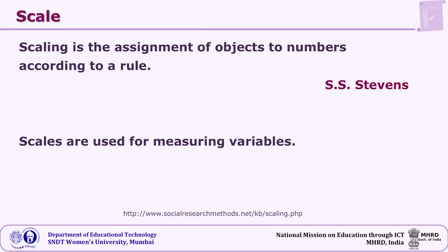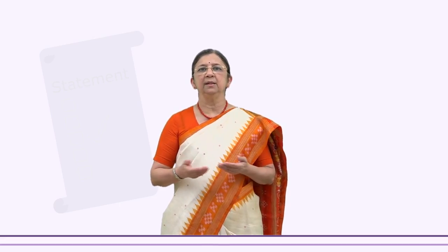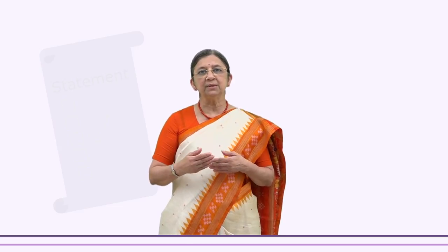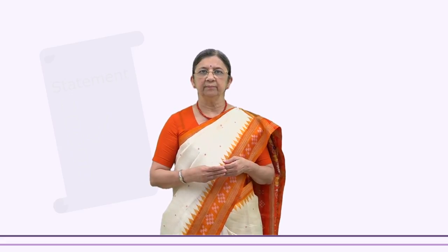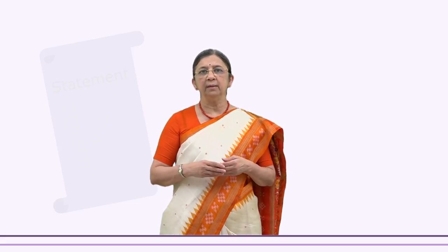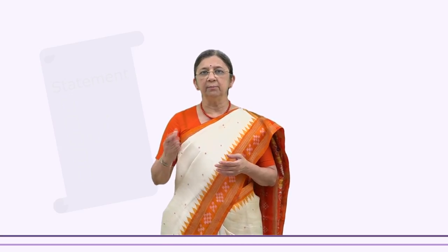Steven says that scaling is the assignment of objects to numbers according to a rule. Generally, objects are not assigned any number, but when we use a scale, that object can get a score — and the process by which we get this is called a scaling process. Many variables are qualitative variables; for example, personality traits. Converting those into quantitative numbers is a challenge, and this can be done by using scales.